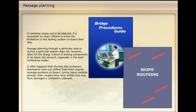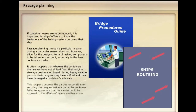It often happens that whereas the containers themselves have not shifted from their original stowage positions on board during heavy weather, their cargos may have shifted and may have damaged a container's sidewalls. This happens because the parties responsible for securing the cargos inside a particular container fail to appreciate that the carrier could be exposed to the effects of heavy weather at sea.